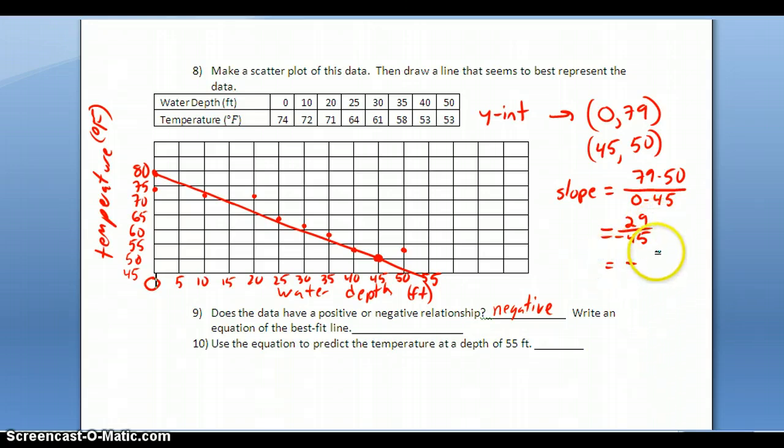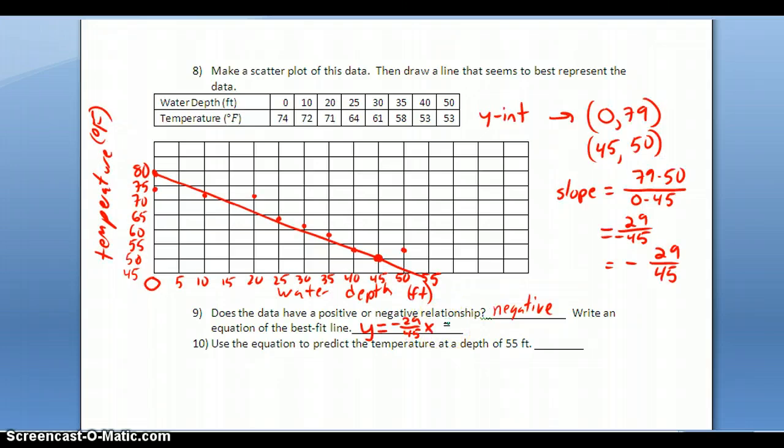I'll rewrite that as negative 29/45. I can't reduce it further. Now I'm ready to write my equation. In slope-intercept form, I need the slope and y-intercept. My equation is y = -29/45 times x plus 79. That's the equation of this line.